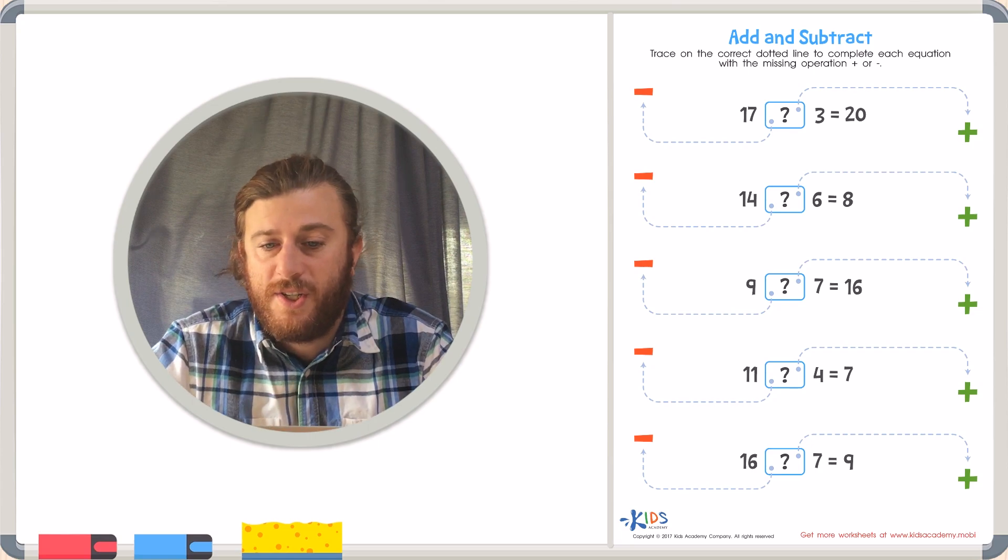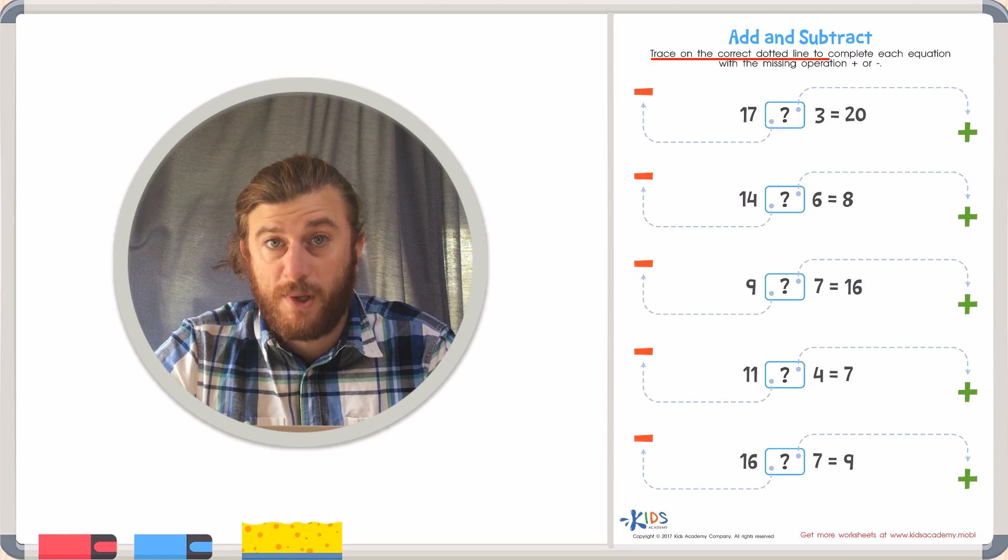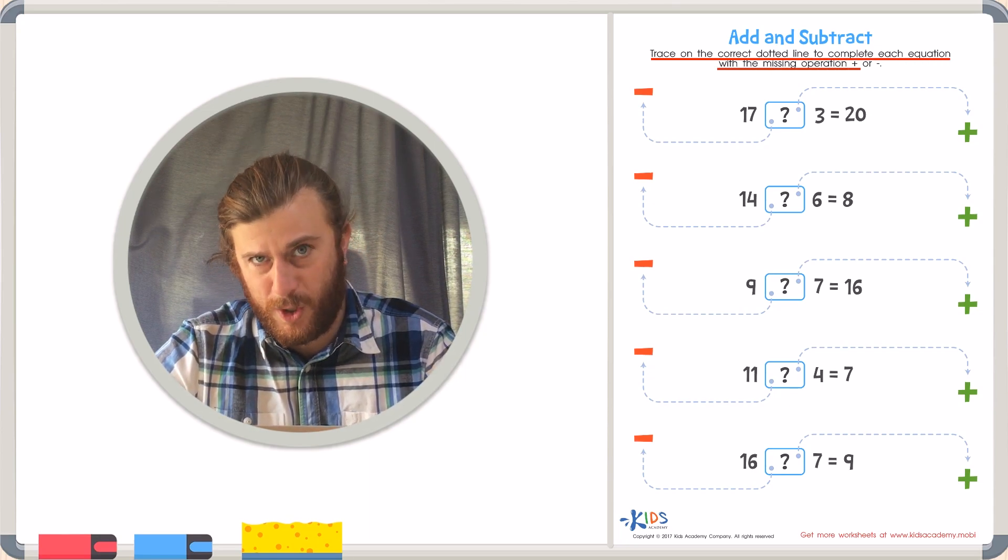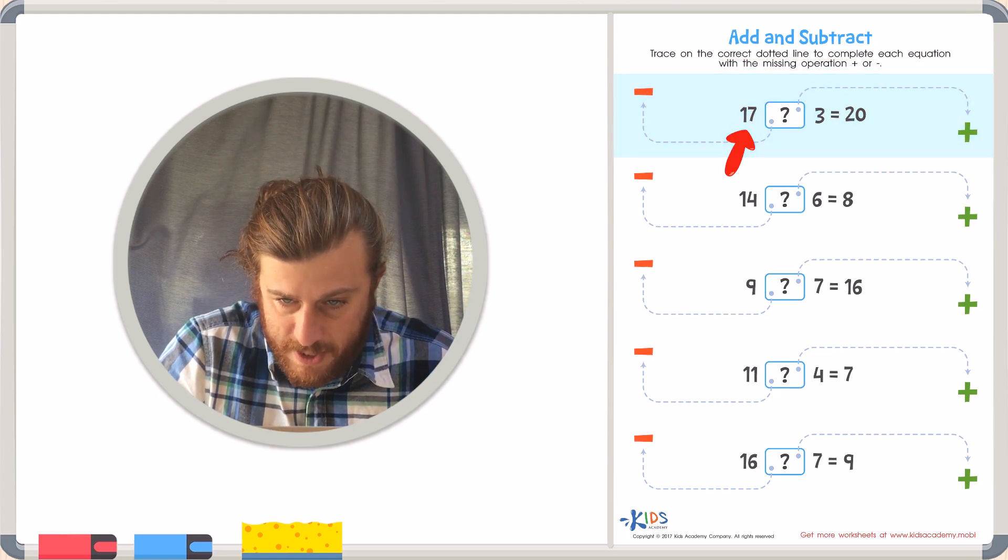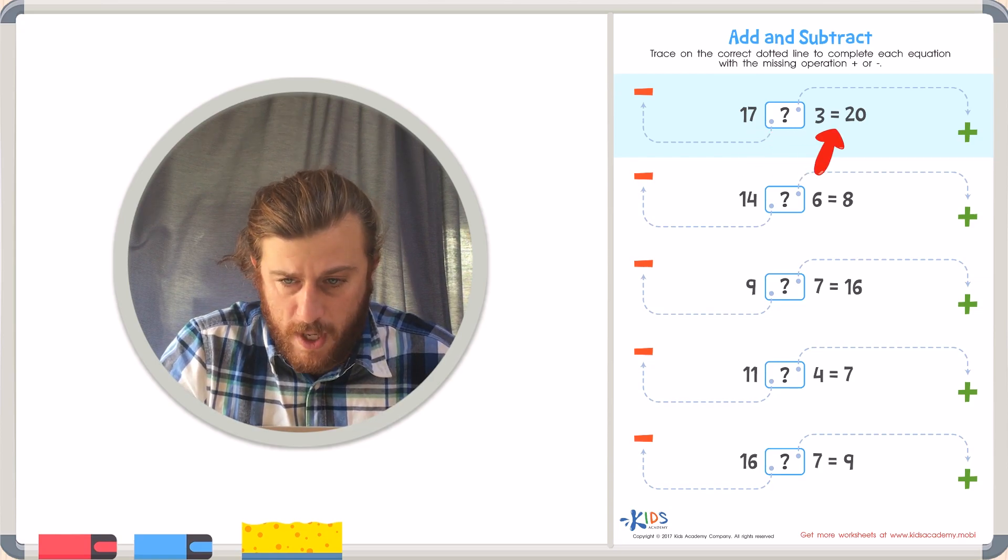The directions say add and subtract: trace the correct dotted line to complete each equation with the missing operation, addition or subtraction. So in our first problem we have 17 plus or minus 3 equals 20.